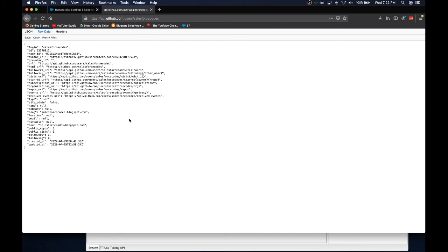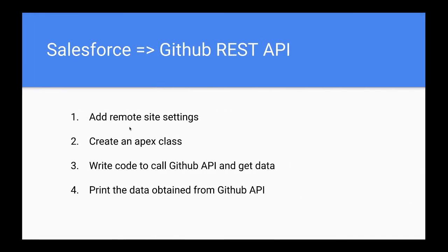To recap: first, we went to Salesforce Settings and added a Remote Site Setting, authorizing Salesforce to access the GitHub API. Then we created a class called GitHubAPI with a method called getGitHubUserDetails. Inside that method we wrote code to hit the GitHub REST API and retrieve data, and finally we printed the data obtained from the GitHub API. Stay tuned for more lessons.